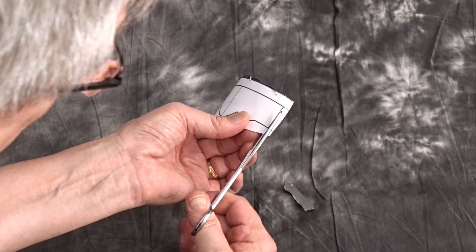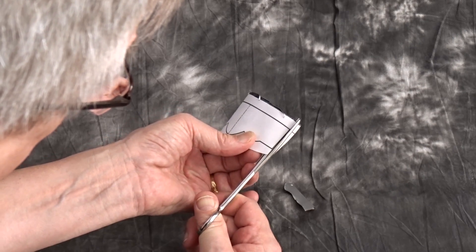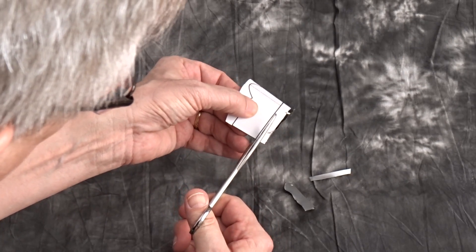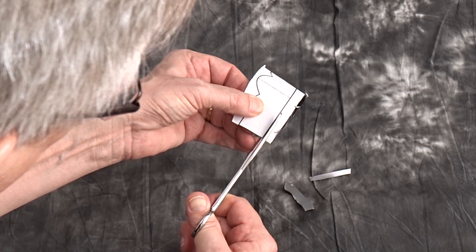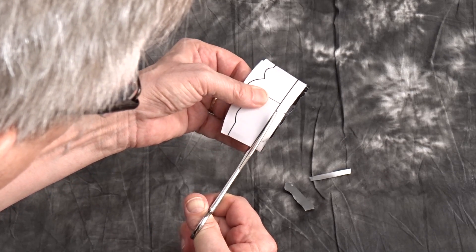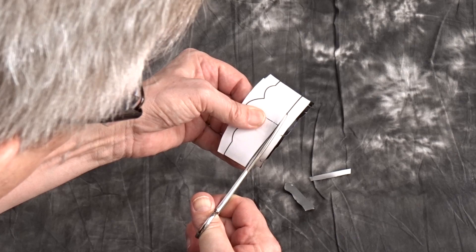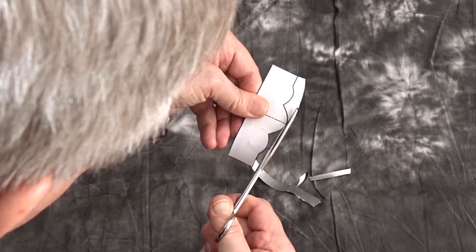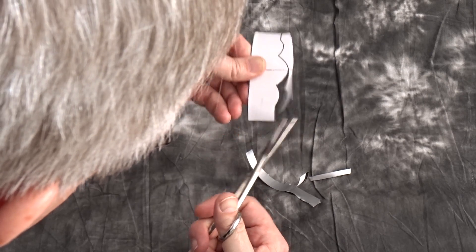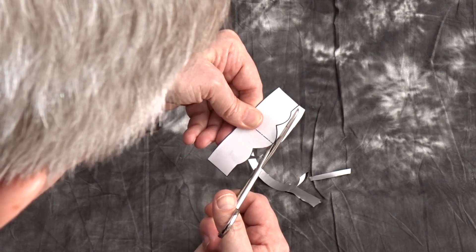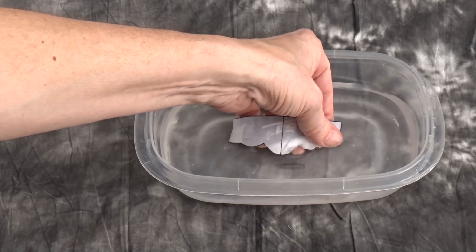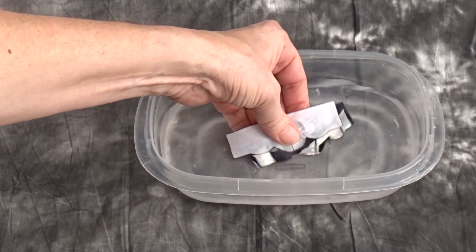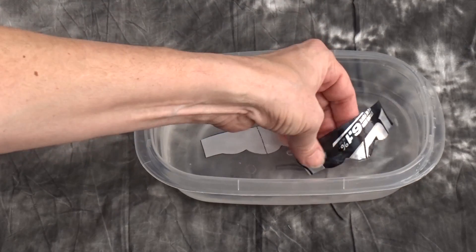Then we can carefully cut around the edges of the pattern. We then soak the pattern in some water to remove the paper and wash the residual glue off of the aluminum.